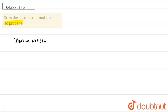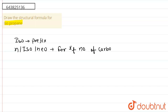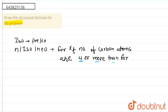The iso prefix is used when the number of carbon atoms is four or more than four. If the number of carbons is less than four, then we cannot use the iso prefix.